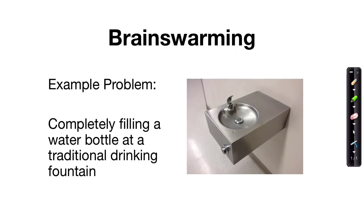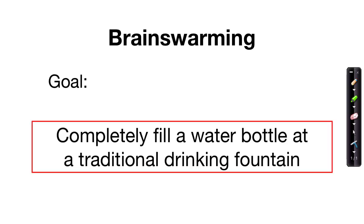Let's look at a real example. There are water bottle filling stations available now in public spaces — many are at airports, schools, and public spaces. But more traditional drinking fountains are still installed in other spaces, and many times these are the only drinking water sources nearby. Suppose we'd like to fill a water bottle using one of these stations. Typically, the water spout is placed low and close to the drain level, and the water release doesn't reach a height that makes filling a water bottle easy or even possible. The problem is completely filling a water bottle at a traditional drinking fountain. We can word the goal as: to completely fill a water bottle at a traditional drinking fountain.